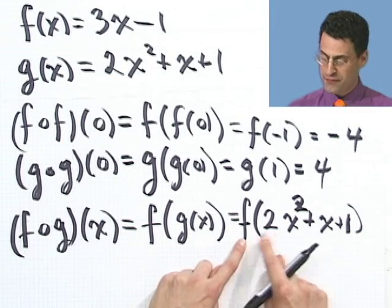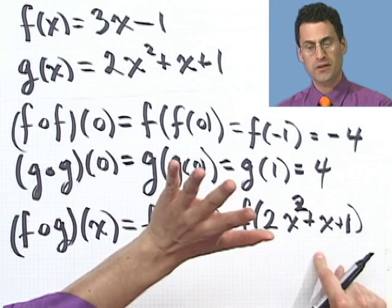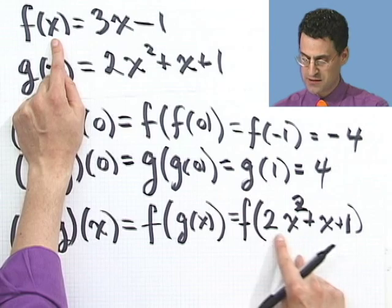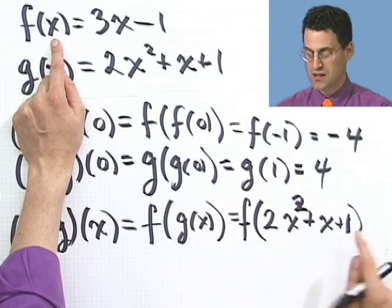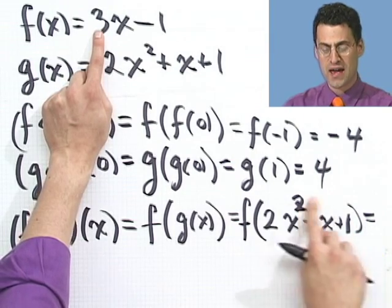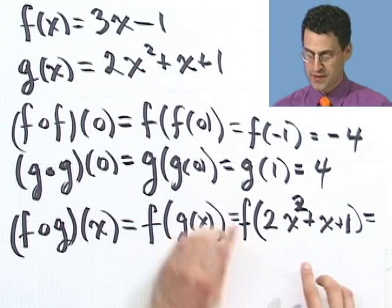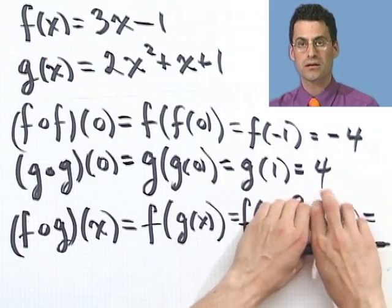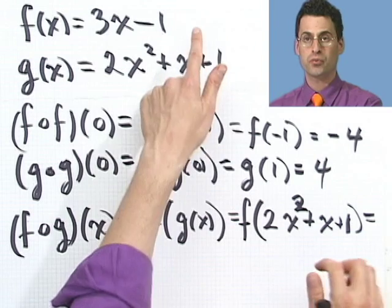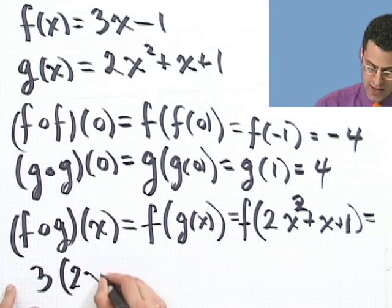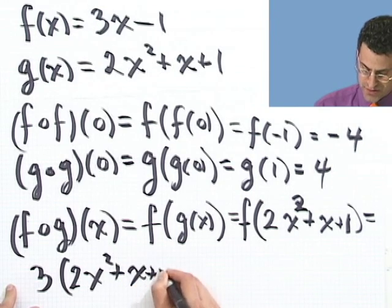Well, now I want to find f of all that. And we've got to be careful here. Remember what this means. Wherever I see an x in the f function, I'm going to replace it by this whole big mess. So in fact, this would equal 3 times that whole big mess minus 1. Because wherever I see an x, I'm going to plug in all this gobbledygook. So I see 3 times gobbledygook minus 1. So that's going to be 3 times the quantity 2x squared plus x plus 1.